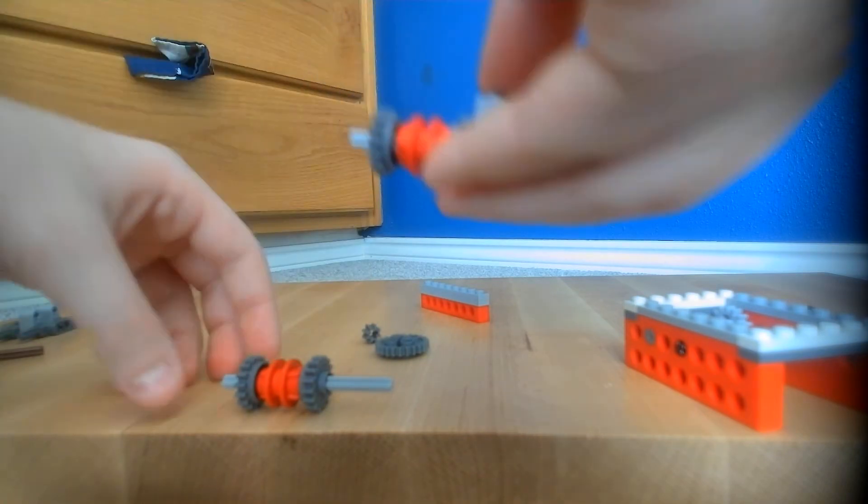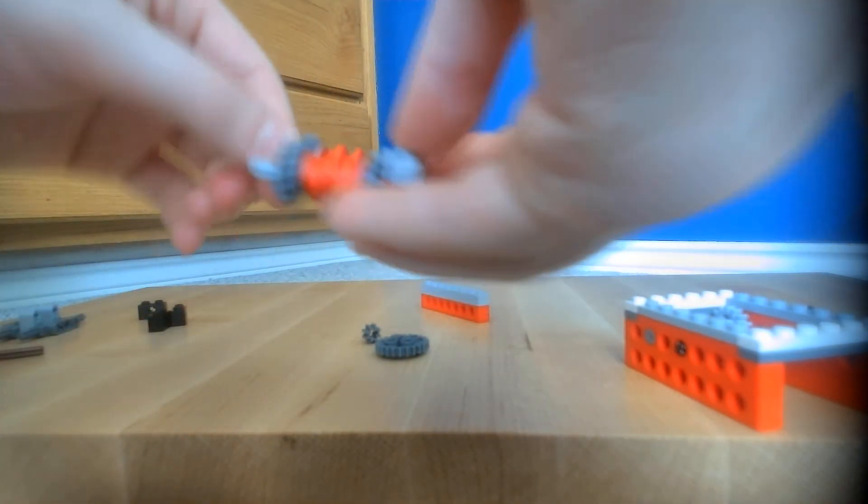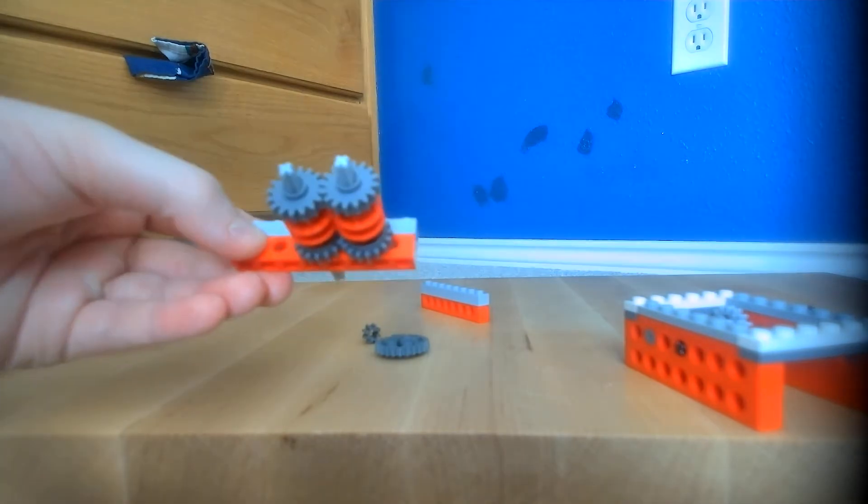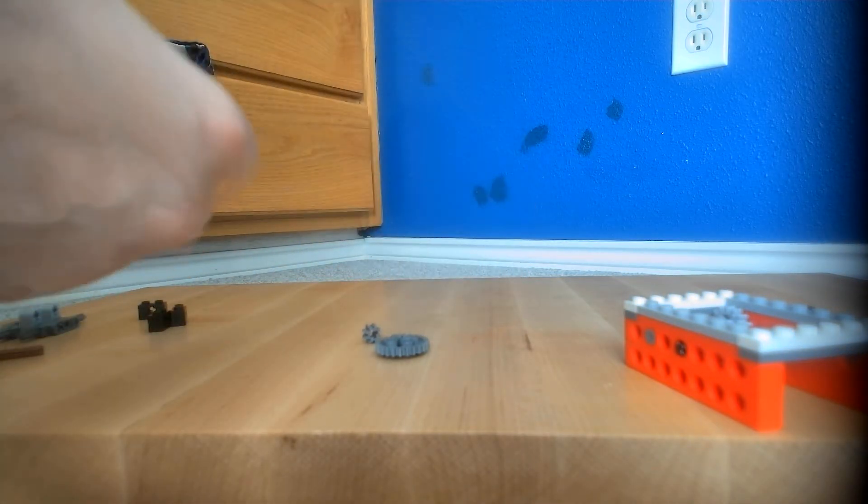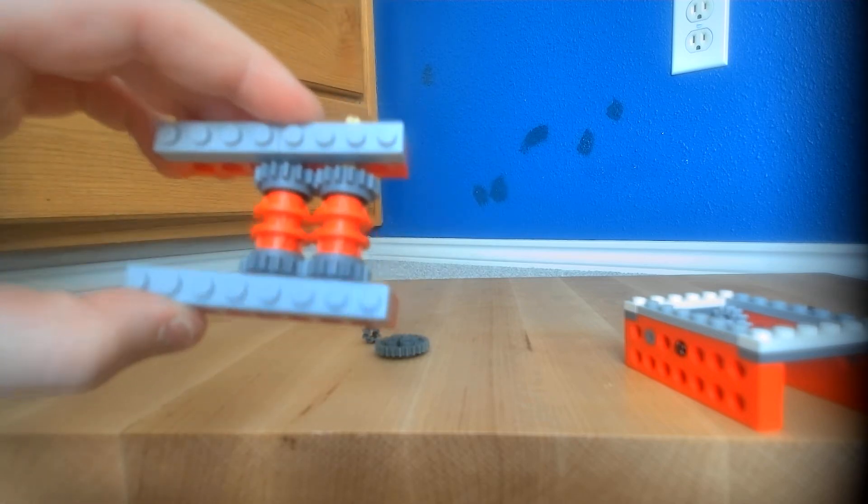And then you kind of put the clutch gears and clutch rings inside of this. And put the other frame piece on. So you have something like this.